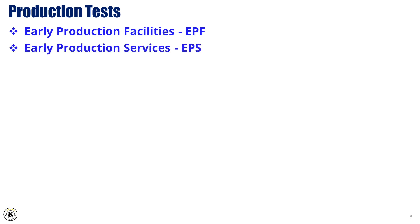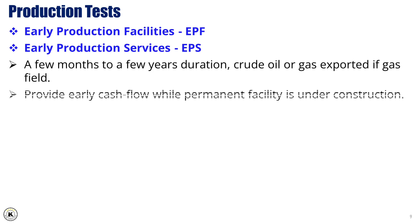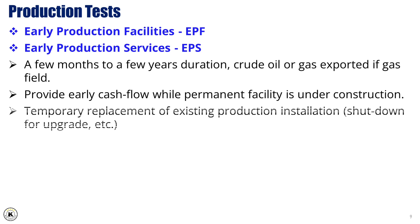Early Production Facilities (EPF) and Early Production Services (EPS) play a crucial role in maximizing asset value and accelerating production timelines. These temporary installations are designed to bring oil or gas production online quickly, even before permanent facilities are completed. EPFs can operate for a few months to several years, depending on field conditions and project requirements. They enable early revenue generation, helping to fund development of permanent infrastructure. EPFs can also serve as a temporary solution when an existing production installation is shut down for upgrades, and for small or economically uncertain fields, they provide a cost-effective alternative to full-scale production facilities.